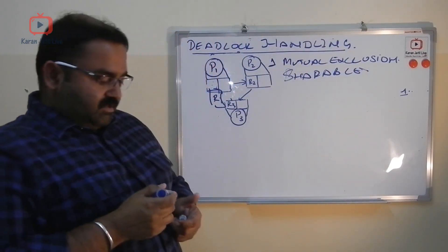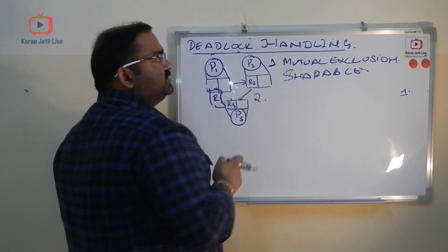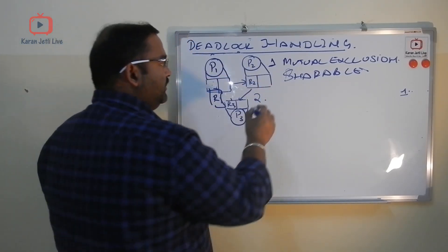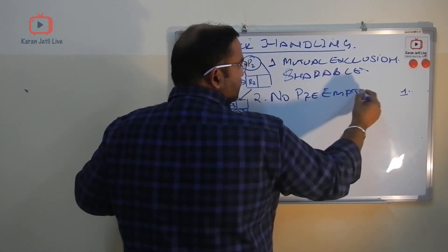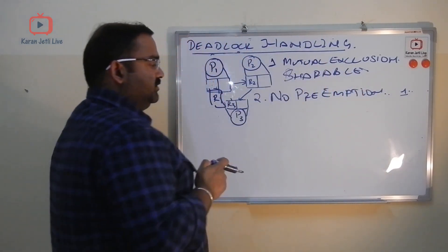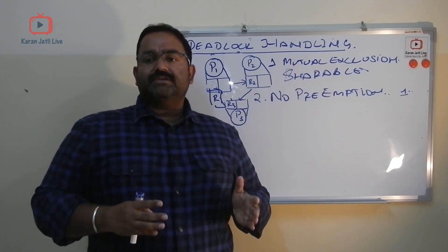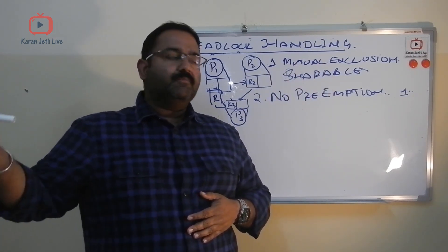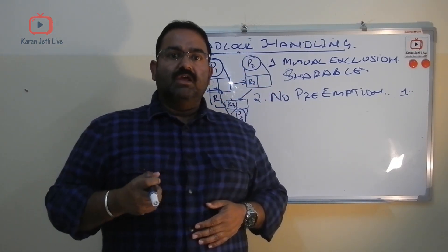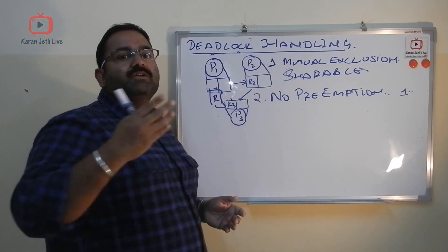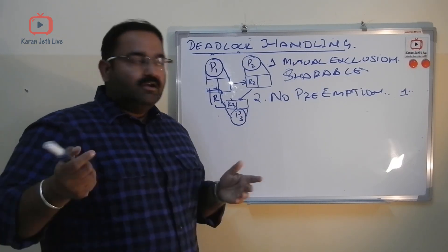The second condition is no preemption. In no preemption, if a process needs another resource it will keep on waiting for that resource but it will not release the resources which it already has.